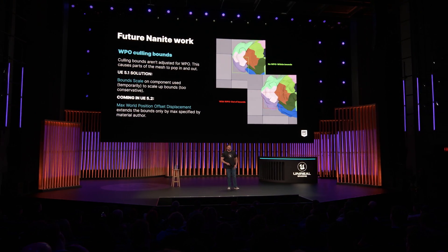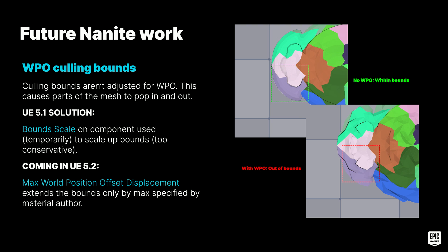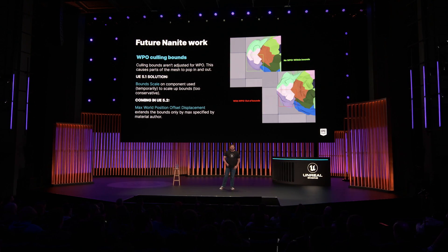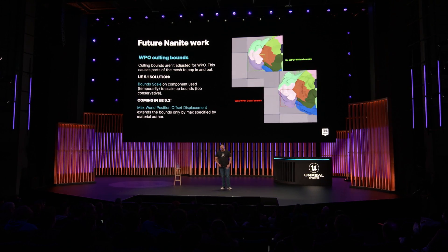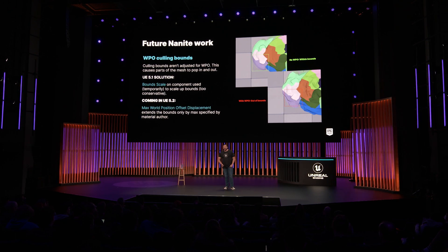I'd like to touch briefly on a WPO issue we're still working on. We currently can't easily account for WPO when culling clusters. Therefore, large WPO values can cause vertices to fall outside of cluster bounds, causing parts of the mesh to pop in and out when the original bounds fall out of view or are occluded. For UE 5.1, we used bound scale on the primitive component to arbitrarily scale up bounds as a temporary solution. However, scaling tends to make culling bounds overly conservative and doesn't handle flat objects well. Coming in UE 5.2, material authors can specify a max world position offset displacement on the material itself to extend the bounds only by the worst-case amount of displacement.